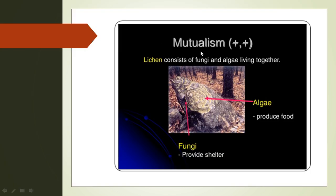An example of mutualism is lichen, which is the combination of fungi and algae living together. Algae, being green, produce food for fungi, and fungi absorb moisture and provide shelter to the algae.